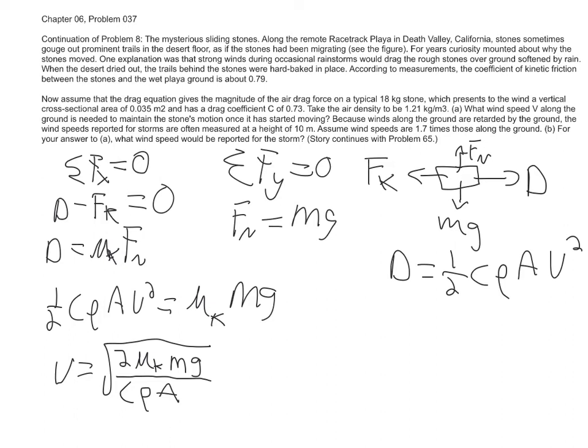So if you plug in your values, you could get a wind speed, and that's the wind speed at the rock, which is what you're asked for in part A, so this would be your answer to part A, whatever this comes out to be, boom, boxworthy.